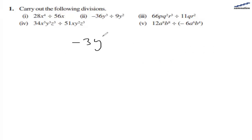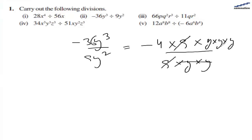The second part: we have minus 36y raised to power 3 divided by 9y squared. We can write this as minus 4 multiplied by 9, and y coming 3 times. At the bottom we have 9y coming 2 times. 9 and 9 cancel, and y squared gets cancelled, so we are left with minus 4y as the answer.